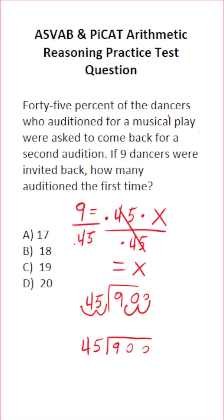This math is very easy to do mentally. 45 times 2 is 90. 45 times 20, therefore, is 900. So we have no remainder. In other words, if nine people were invited back to a second audition, and that's 45% of the total, that means 20 people auditioned the first time.